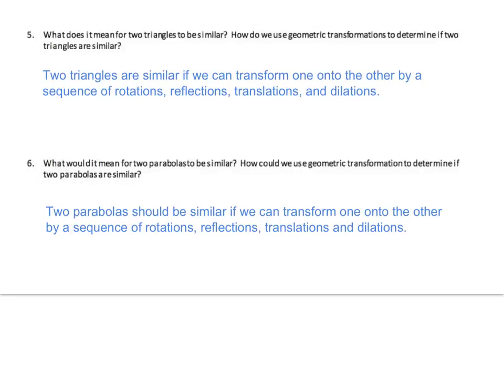What does it mean for two triangles to be similar? Two triangles are similar if we can transform one onto the other by a sequence of rotations, reflections, translations, and dilations — where dilations are what make things skinnier and wider. Similarly, two parabolas should be similar if we can transform one onto the other by a sequence of rotations, reflections, translations, and dilations. Dilations are where they don't look congruent anymore, but they are still similar.